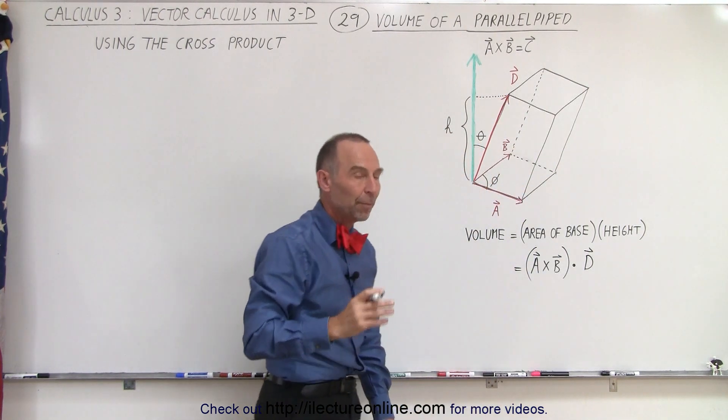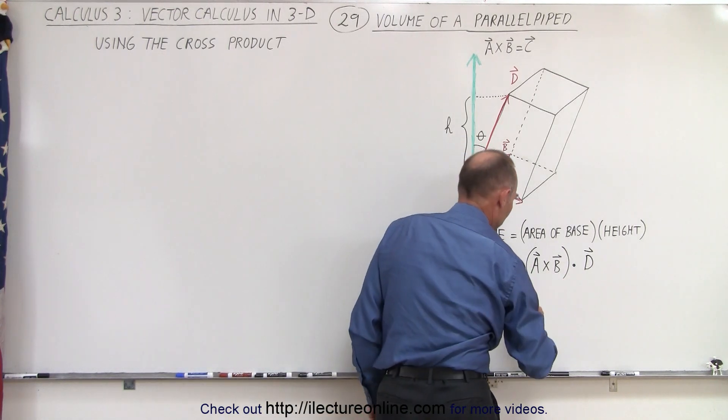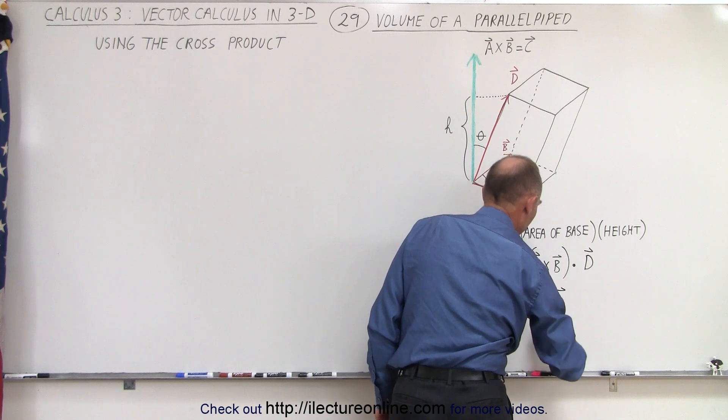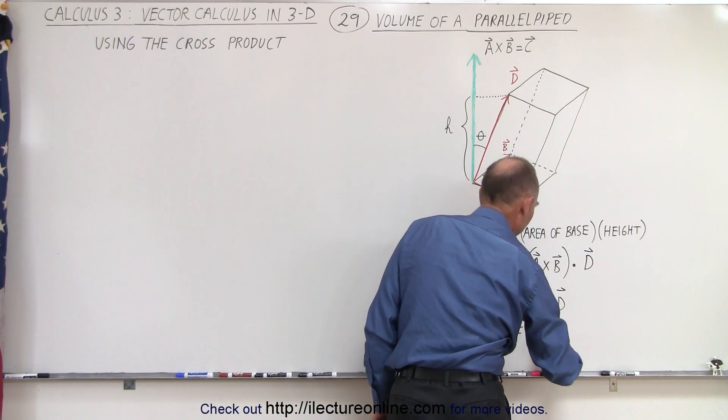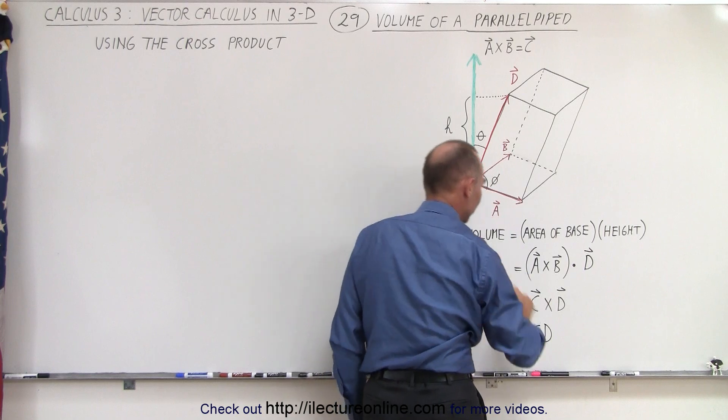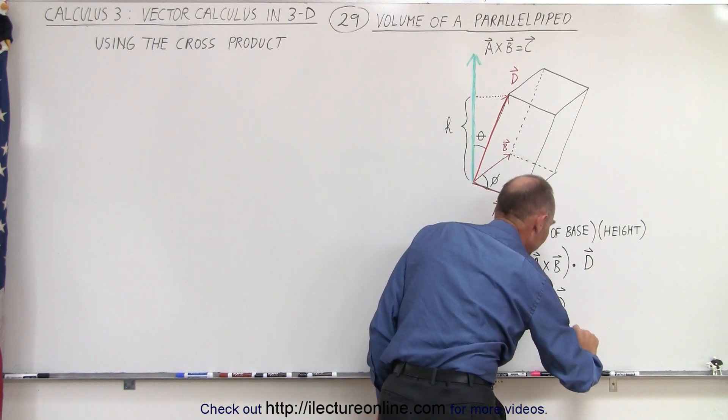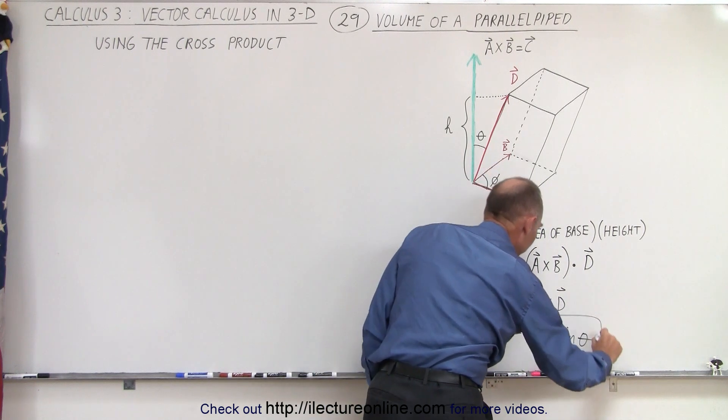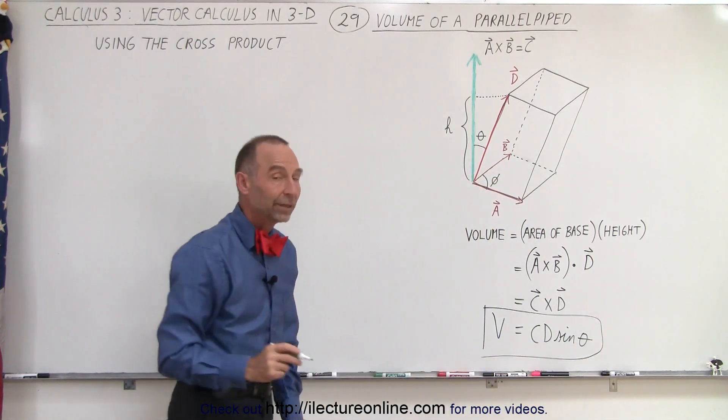And remember that this can now be written as C dot D, which can be written as the magnitude of C times the magnitude of D times the cosine of the angle between the two, the cosine of the angle theta. And that was going to be the volume of the parallelepiped.